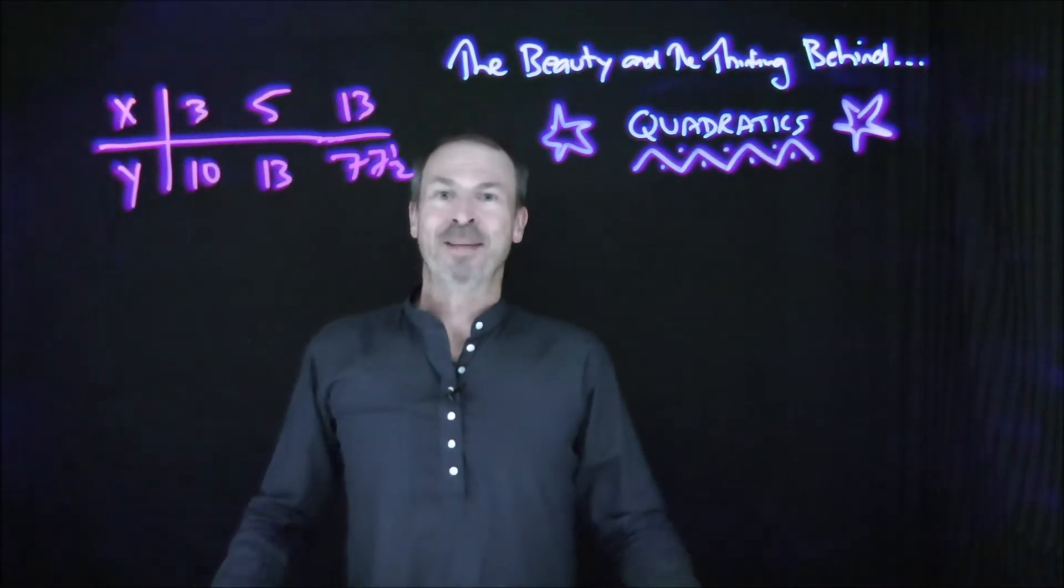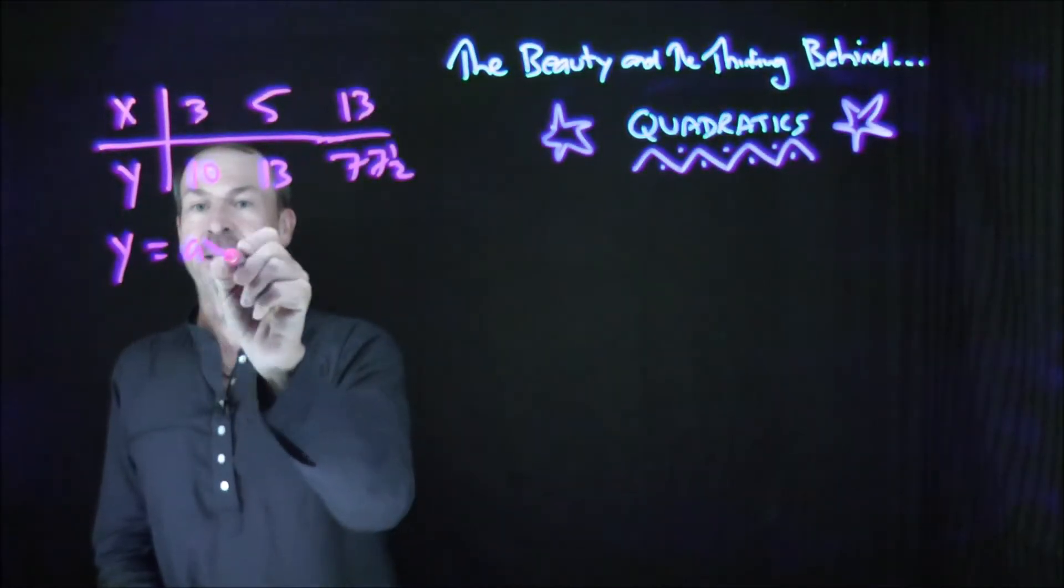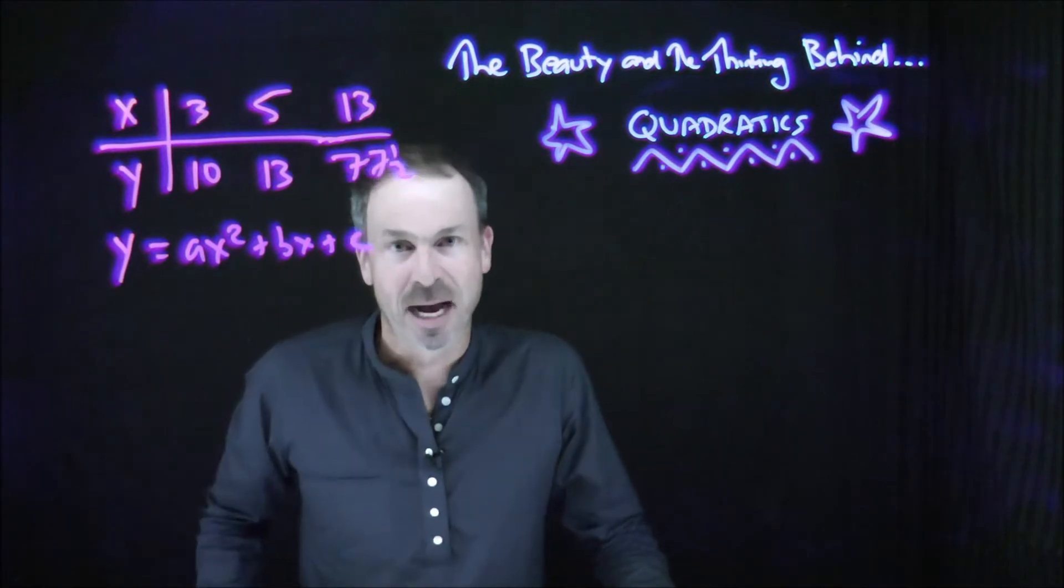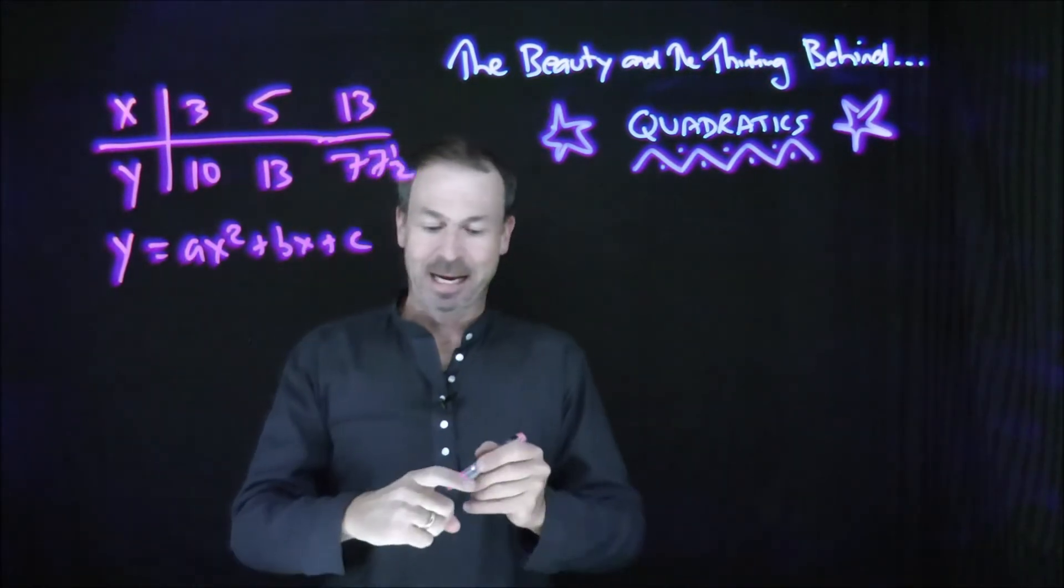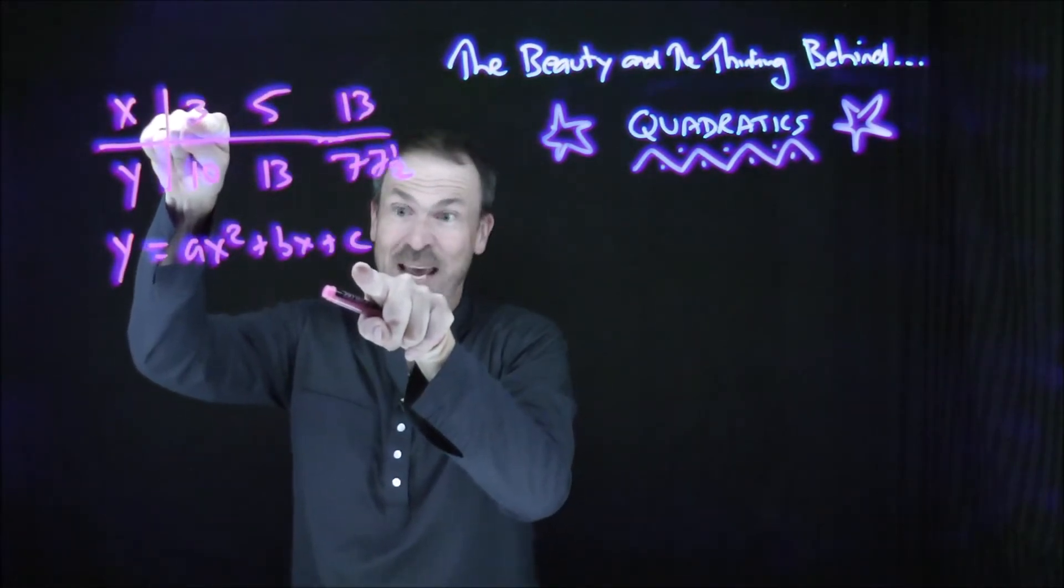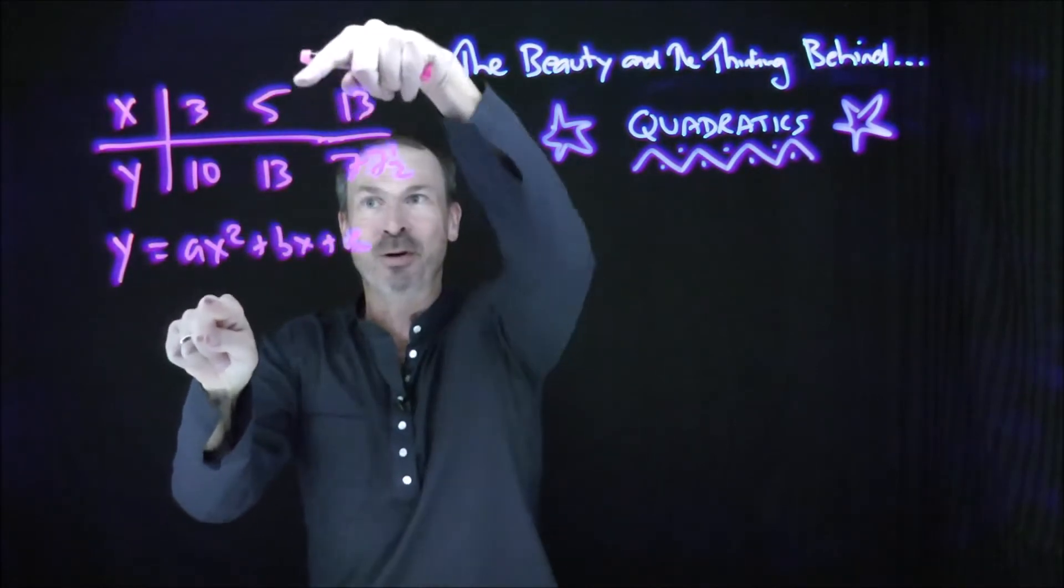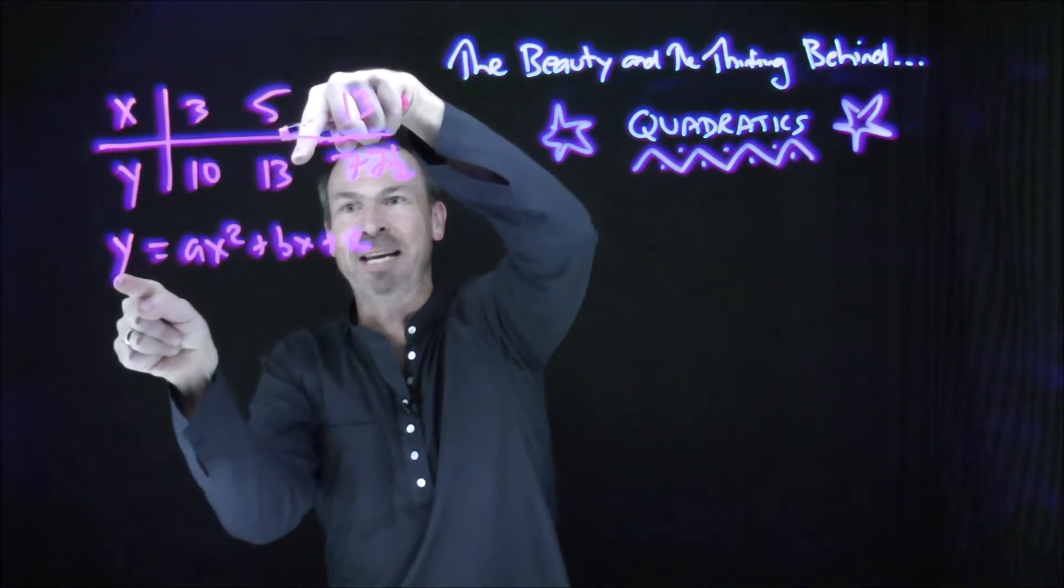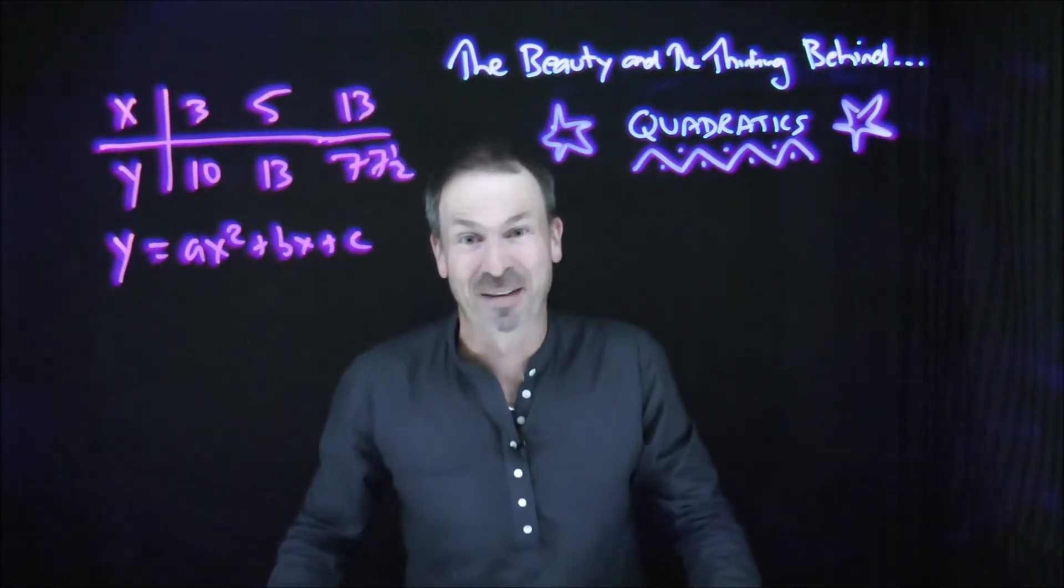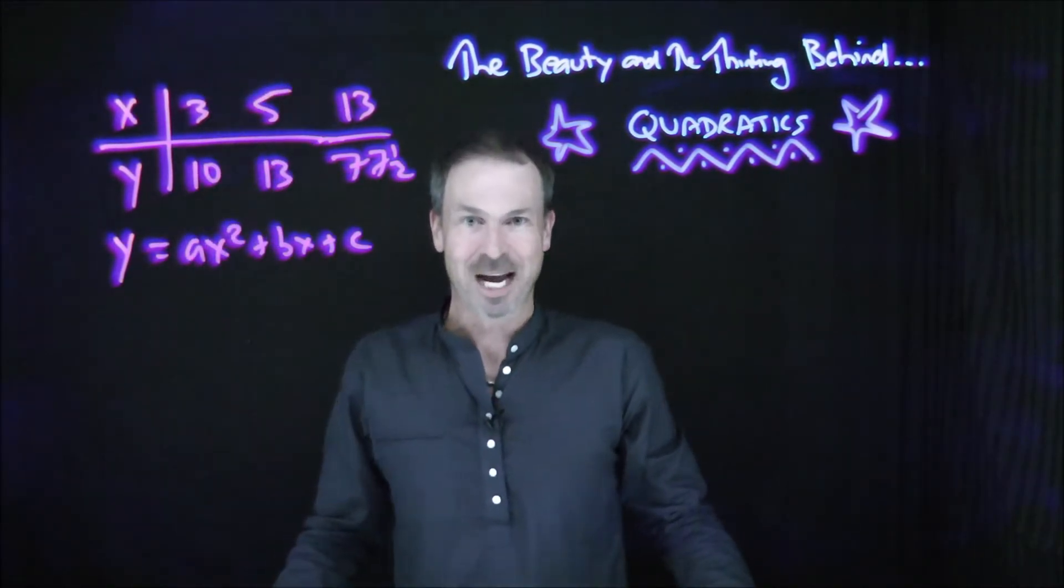So three data values. And they say, please find a quadratic equation, some quadratic equation like this. Ax squared plus bx plus c, y equals that. That matches that data. So you're going to find three numbers, a, b, and c, such that if you put in x equals 3 and work out this formula for 3, this expression for x equals 3, out will come y equals 10. Put in x equals 5, out should come the number 13, y equals 13. And put in 13 for x, and that should come y equals 77 and a half. That is, find a quadratic equation that fits three given data points.